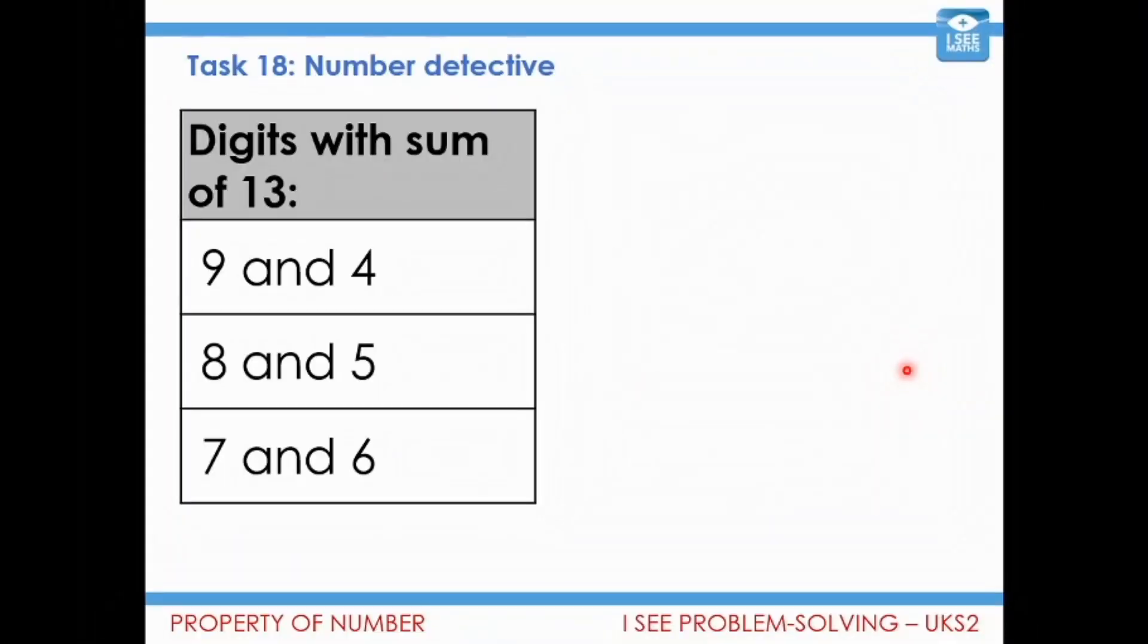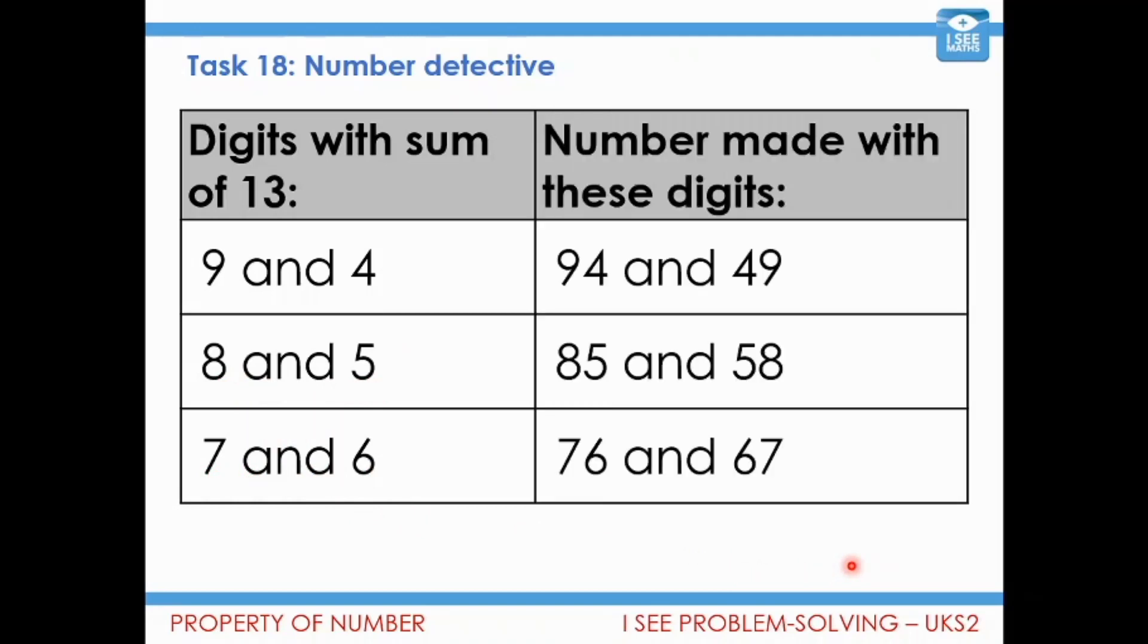So, let's have a look at the process of answering this question. Digits with a sum of 13 for this two-digit number. Well, I could use a 9 and a 4. 9 plus 4 is 13. I could use an 8 and a 5. I can use a 7 and a 6. And they're my three possibilities. So then I've just got to think, which numbers can be made using those digits with those sums of 13? Well, 94 and 49, 85 and 58, 76 and 67.